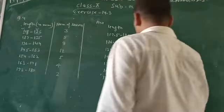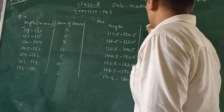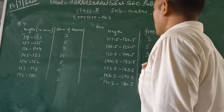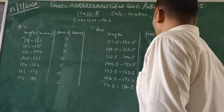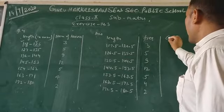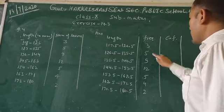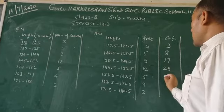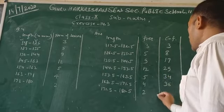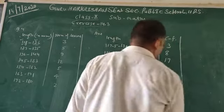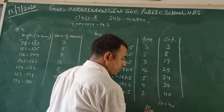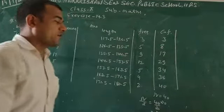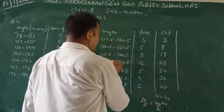Frequency: 3, 5, 9, 12, 5, 4, 2. Cumulative frequency CF: 3, 8, 17, 29, 34, 38, 40.